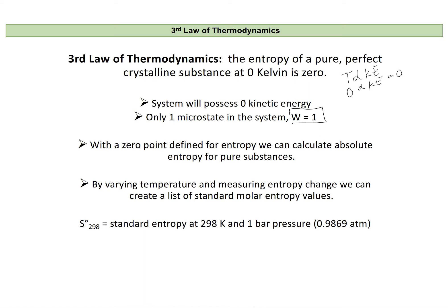If we can define a zero point for entropy by stating this law — that at zero Kelvin we will have zero entropy — then from that zero point we can actually calculate absolute entropy for pure substances.